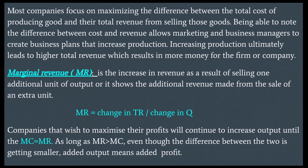Most companies focus on maximizing the difference between the total cost of producing goods and their total revenue from selling those goods. Being able to note the difference between cost and revenue allows marketing and business managers to create business plans that increase production. Increasing production ultimately leads to higher total revenue, which results in more money for the firm or company.